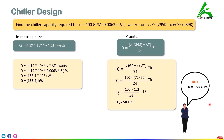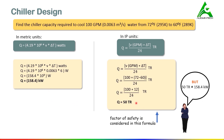There is an important point to understand: using these two different equations we get different values. Is 50 tons equal to 158.4 kilowatts? No. The reason is that in the IP formula we included a factor of safety — the value 449 was rounded up to 500 — which is why we get a different, slightly higher value. If you use the exact value of 449, the values obtained from metric and IP calculations will be the same. This is the correct explanation for the difference.